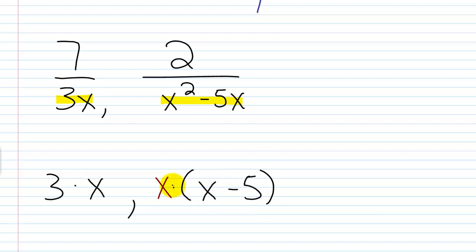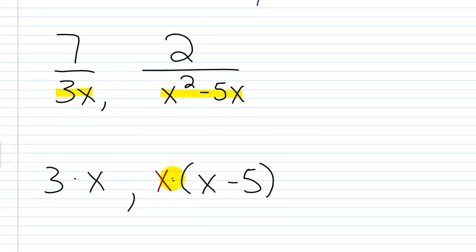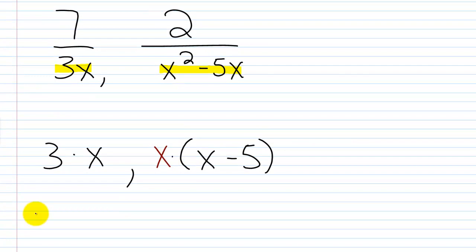So now it's a little bit different than we've seen in the past, but really it's the same concept. When we build our LCD, what we want to do is we want to list each different denominator factor, again, the greatest number of times it appears in any of the denominators, and then we're just going to multiply that together. So I have a 3 that occurs, and I don't have a 3 over here in this factorization, so I know I'm going to have one 3 in the LCD.